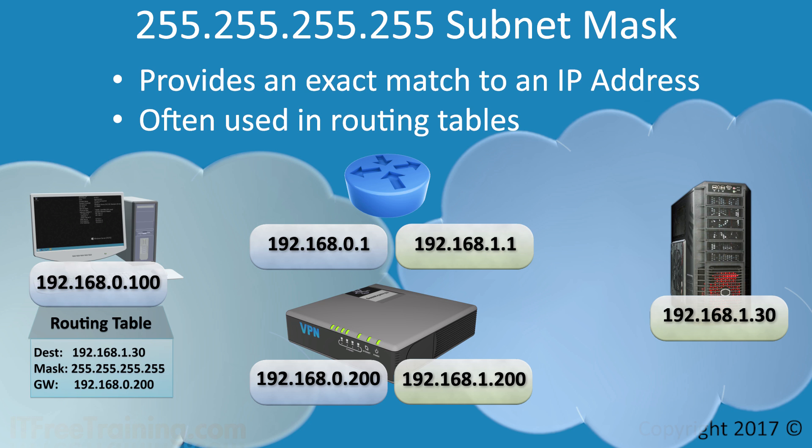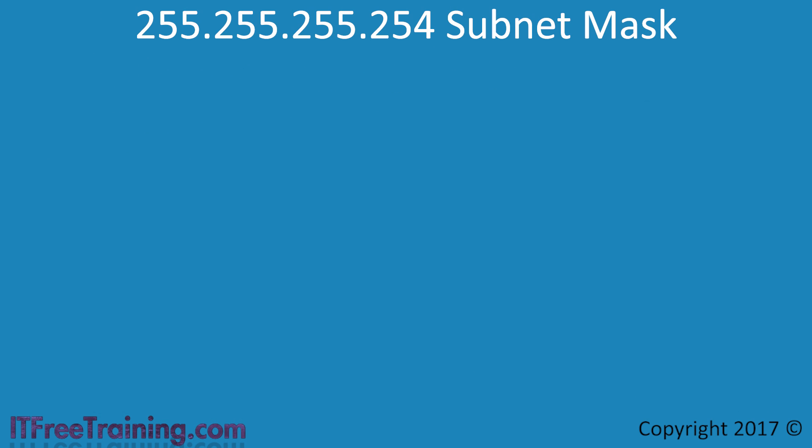Any other traffic for any other network will not match this new rule and will be sent to the router. The administrator has achieved the objective of not affecting any other users on the network, while ensuring all traffic from their workstation to the server is routed through the new device. The next subnet mask I will look at is 255.255.255.254, which is an interesting subnet mask that leads us to the topic of network and broadcast addresses.